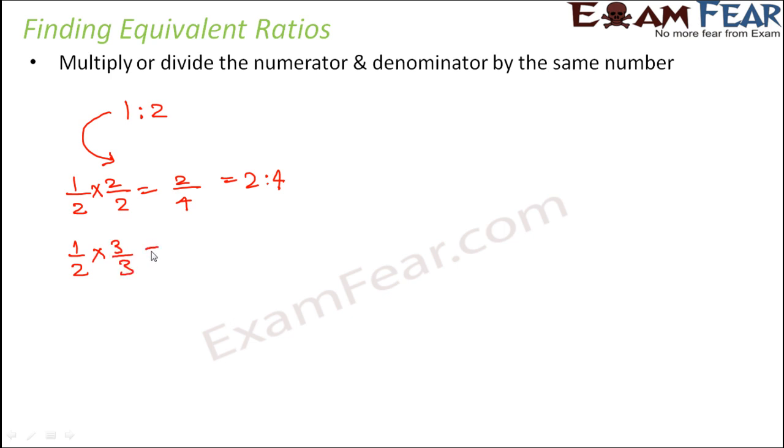You can also multiply it by 3, so you get 3/6, that is 3 is to 6. If you multiply by 4, you get 4/8, that is 4 is to 8. So here 2 is to 4, 3 is to 6, 4 is to 8, these are all equivalent ratios of 1 is to 2.